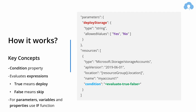Let's take an example. If you have a parameter called deploy storage that allows you to pass only two values — yes or no — then you can create a condition which will check whenever your parameter deploy storage equals yes, in which case the storage account would be deployed. If you select no, then it would be skipped. And that's pretty much it when it comes to the basics of how this works.